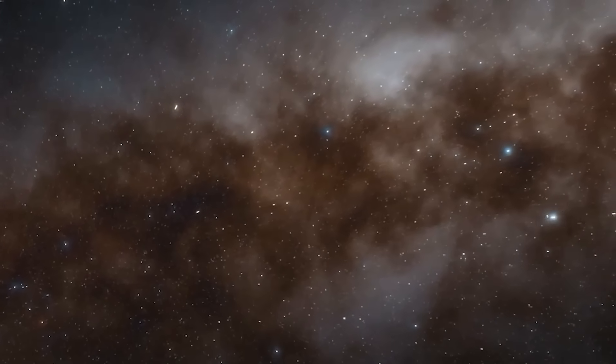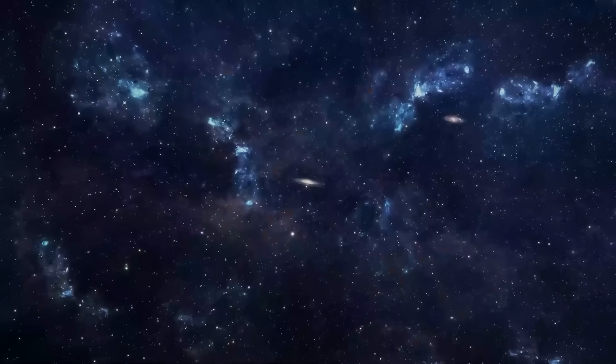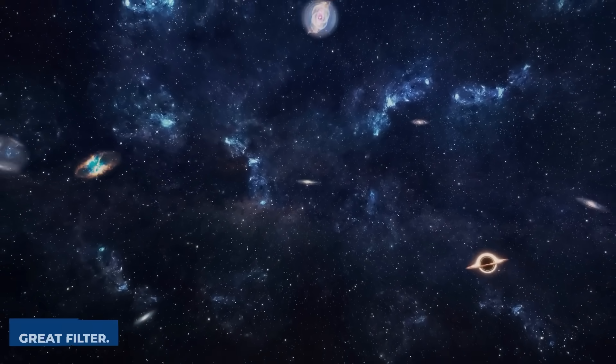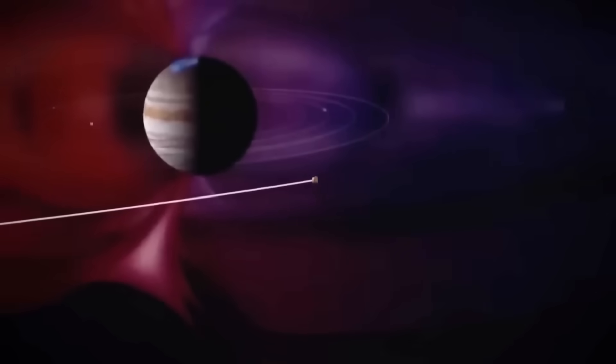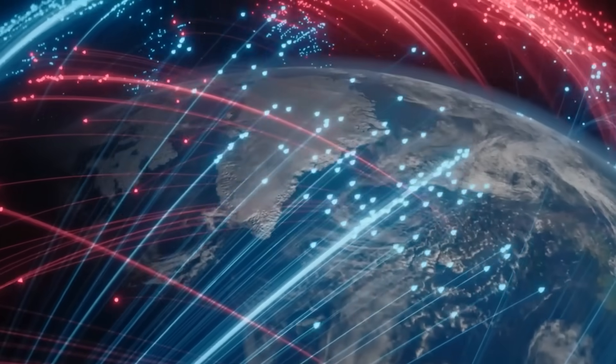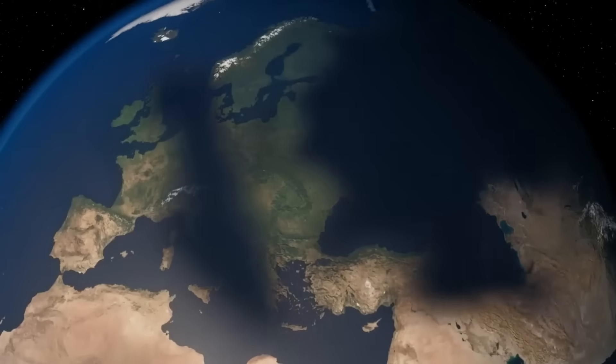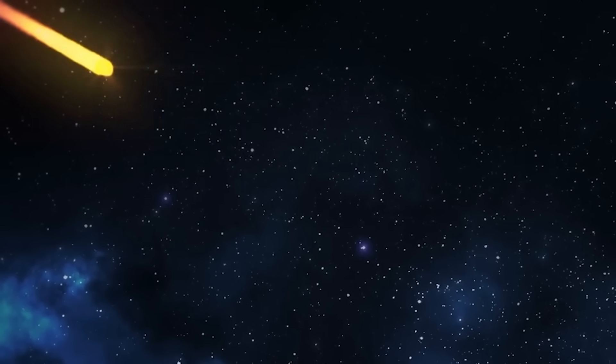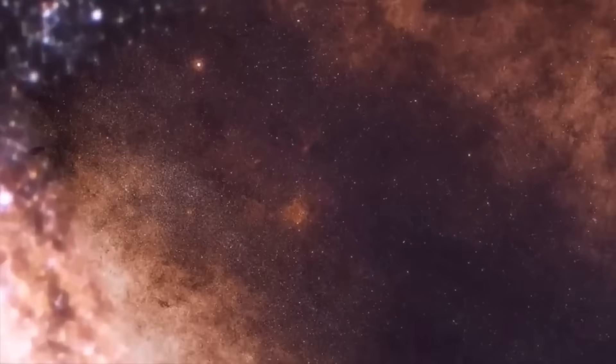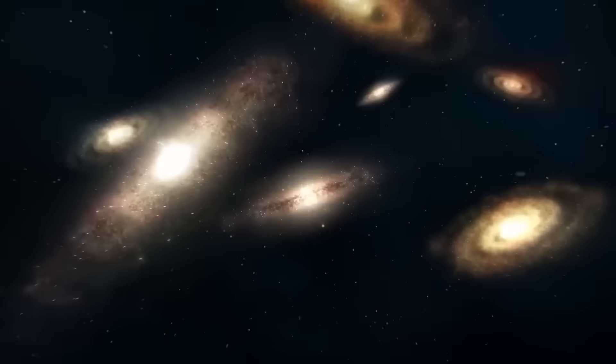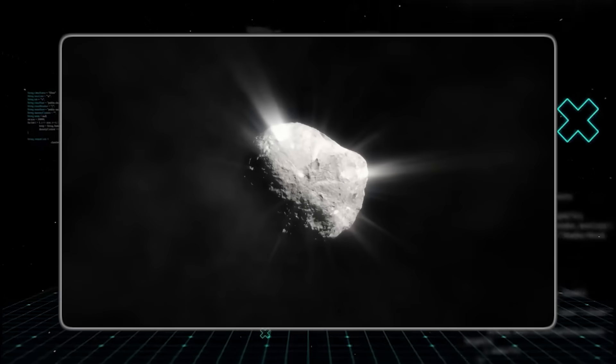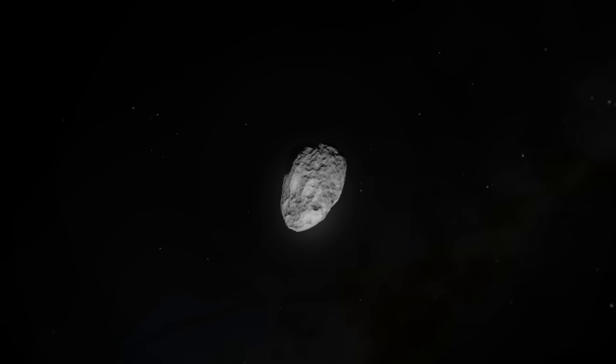What if it's not seeding life, but programmed to end it? Triggering the Great Filter. There's a dark and chilling concept in cosmology known as the Great Filter. It's the idea that there's some kind of barrier or challenge that prevents civilizations from becoming interstellar. Maybe it's nuclear war or climate change or something we can't even imagine. But a terrifying new theory, amplified by Avi Loeb's warnings, suggests the filter isn't something we do to ourselves. It's a test that comes to us from the outside. And we may have just failed it. This theory reframes 3I Atlas not as a scout or a gardener, but as a sentinel, a cosmic tripwire, a doomsday machine.